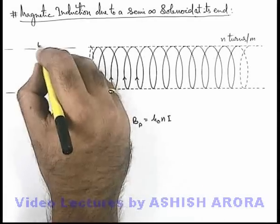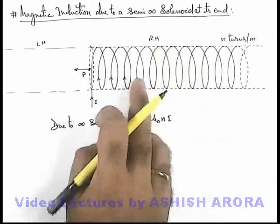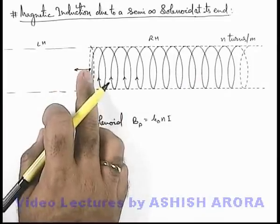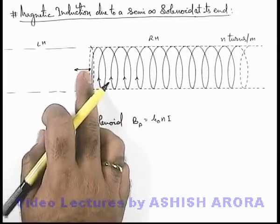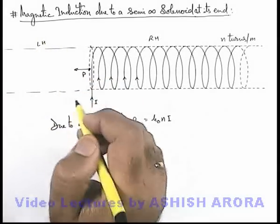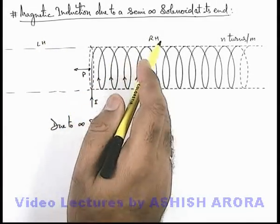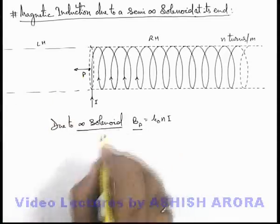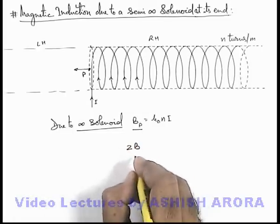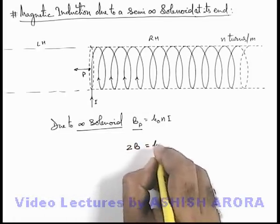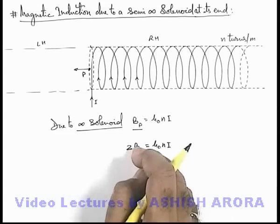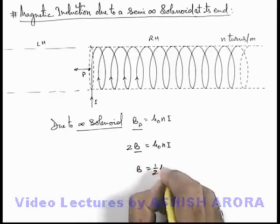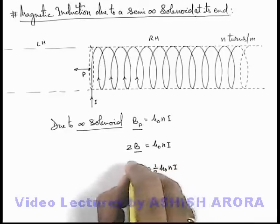Now the left half and right half of solenoid will be identical with respect to any point in the solenoid which can be considered as center. So if the left half is producing a magnetic field B, then the right half will also produce a magnetic field B. This magnetic field due to infinite solenoid can be written as 2B, which equals μ₀nI, where B is the magnetic induction due to any half of solenoid. So this B can be written as B = (1/2)μ₀nI.